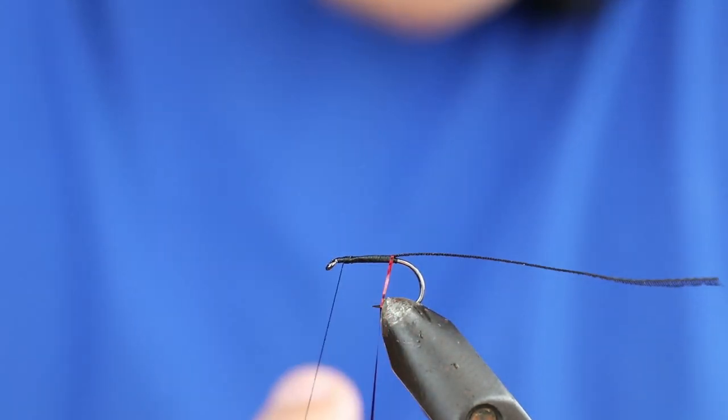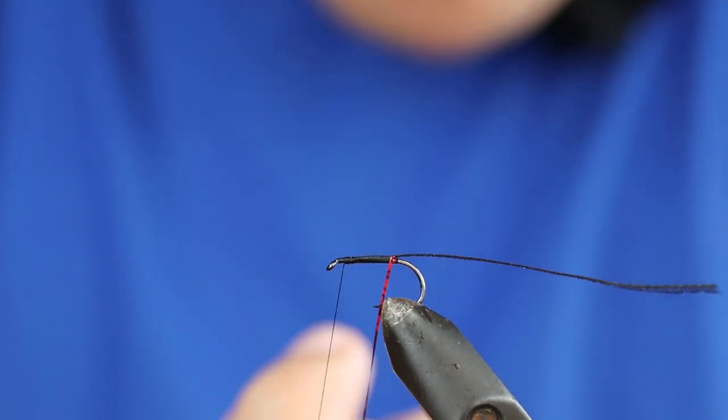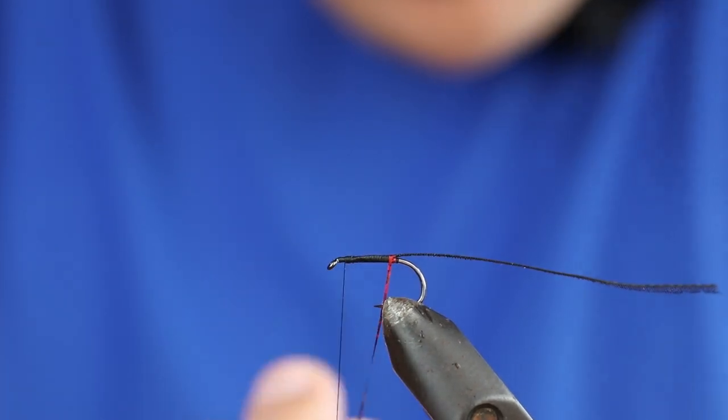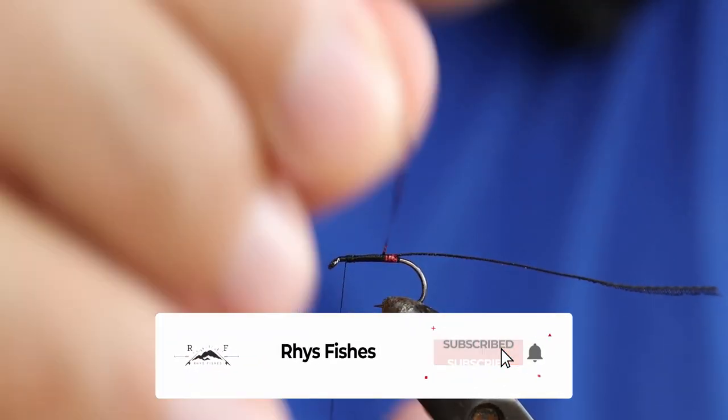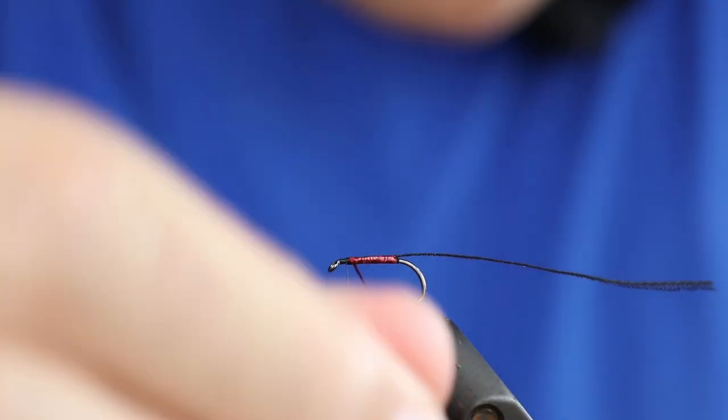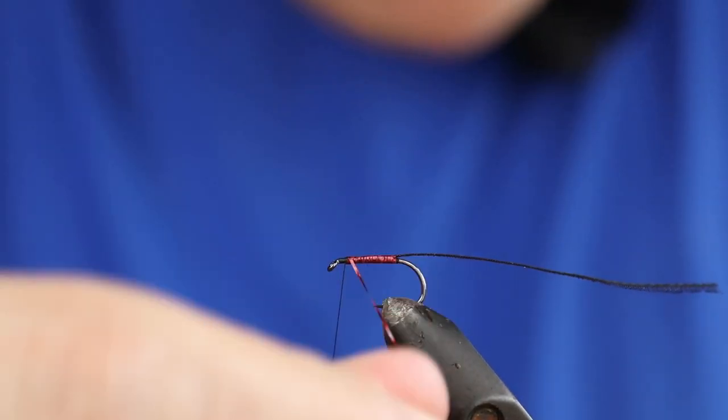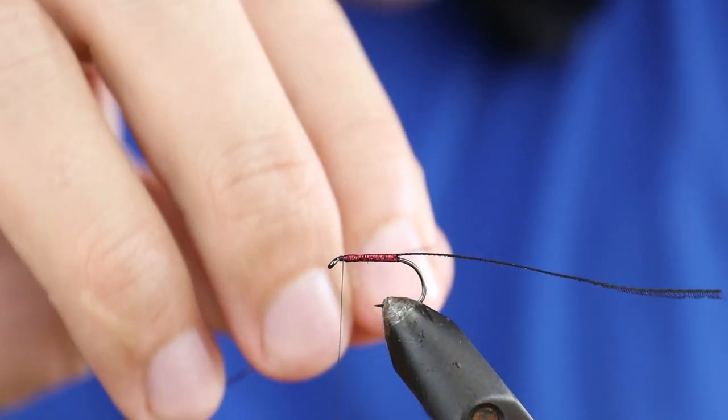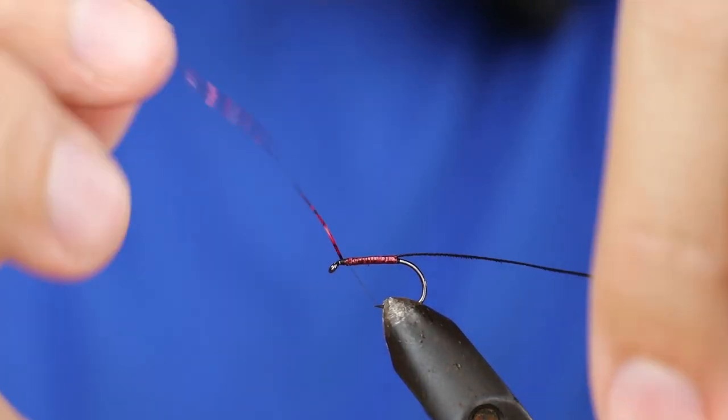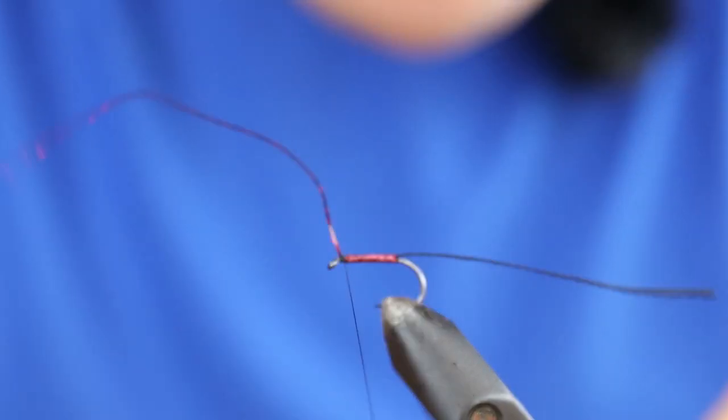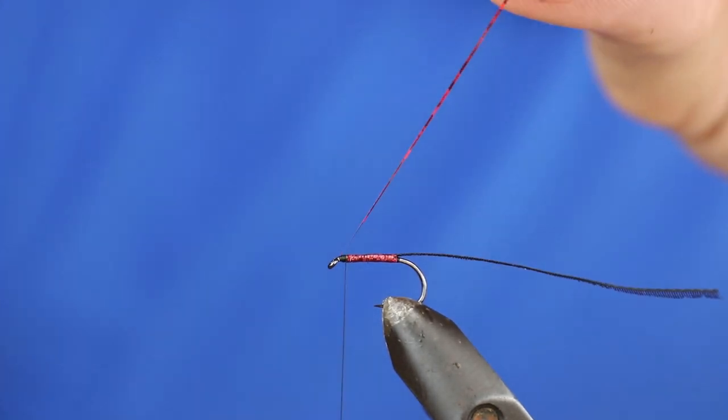I'm going to tie it off a bit earlier before the eye because we've got to tie off the pseudo hackle, put a wing in, and add two jungle cock cheeks, so you're going to need space up here.